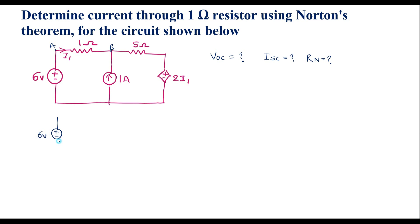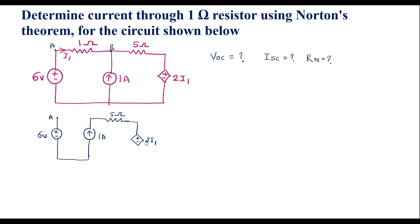In the redrawn circuit, there is a 6 volt source. This is node A and here I will open the AB branch. The 1 amp current source remains in parallel, and the 5 ohm resistor is connected to 2I1. We can see that when AB branch is open, current I1 becomes 0 because no current flows there.